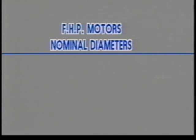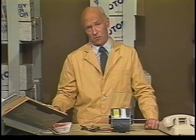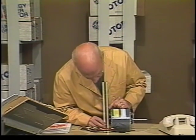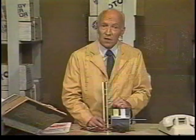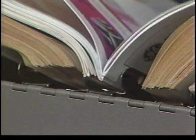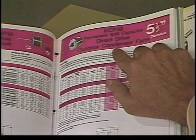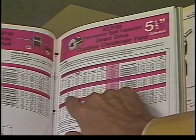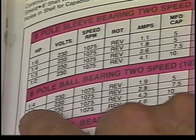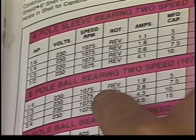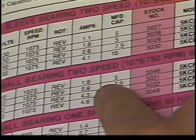It's always wise to double-check the specifications of the original model against those listed for the replacement stock number. The specs for the replacement model are also available in most replacement guides, listed by motor diameter. Most FHP motors come in four nominal diameters: three and a half, four, five, and five and a half inches. If you're not sure, go ahead and measure — if it's three and three-eighths, call it three and a half. For our five-and-a-half-inch motor, we turn to that section. Knowing the application is an outdoor condenser fan, we locate our replacement stock number 3046, which verifies the proper specs for horsepower, voltage, RPM, rotation, amperage, and capacitor rating as compared to the nameplate data on the failed original motor.